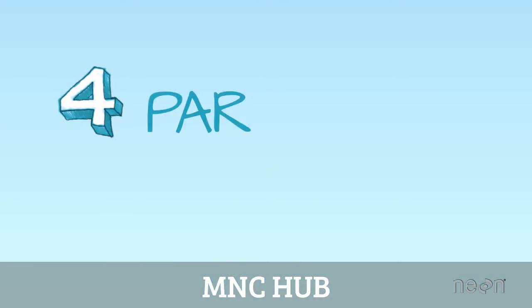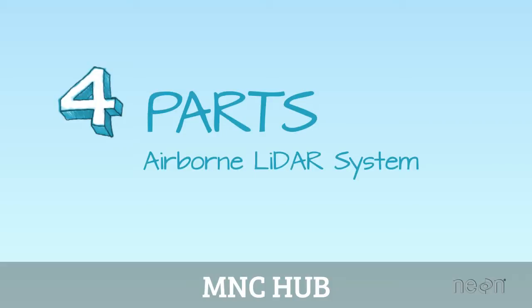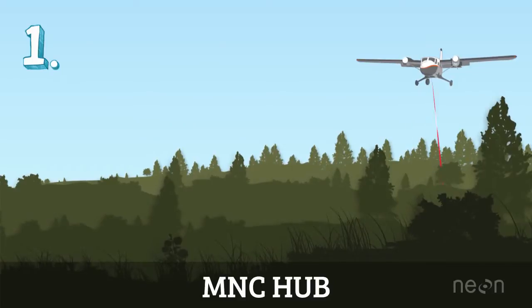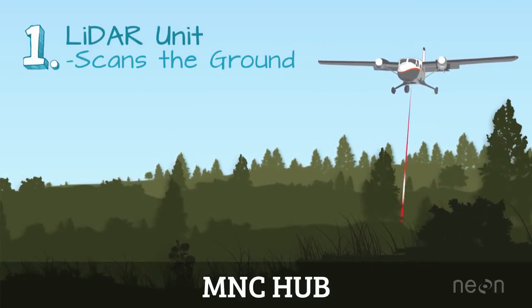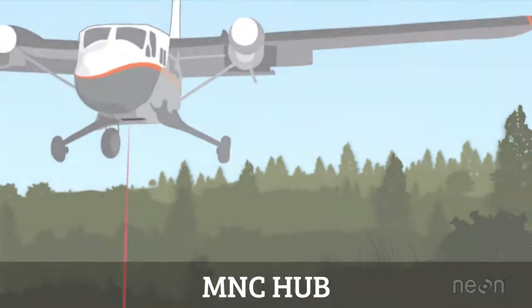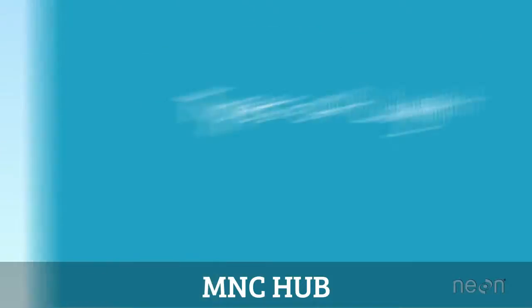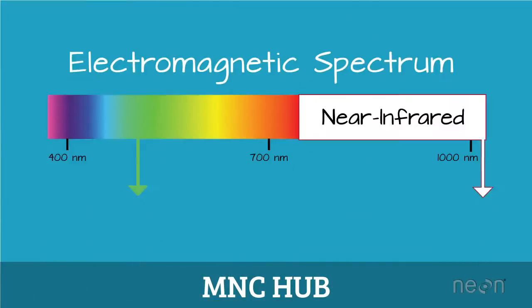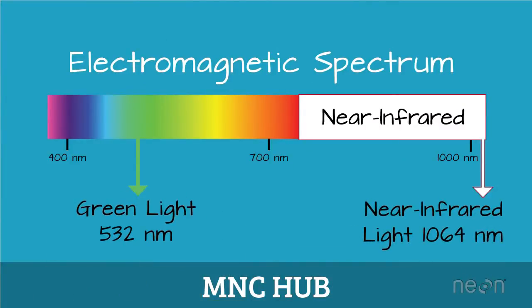To understand how lasers are used to calculate height in airborne LIDAR, we need to understand the four parts of the system. First, the airplane contains the LIDAR unit itself, which uses a laser to scan the Earth from side to side as the plane flies. The laser system uses either green or near-infrared light, because these wavelengths reflect strongly off of vegetation.